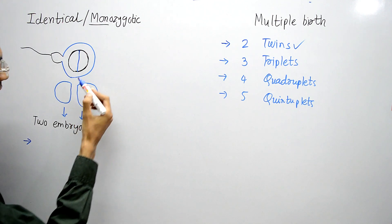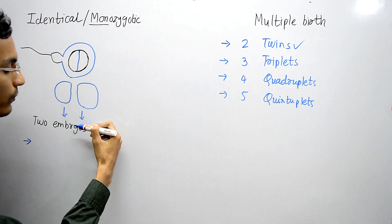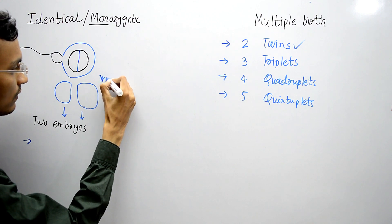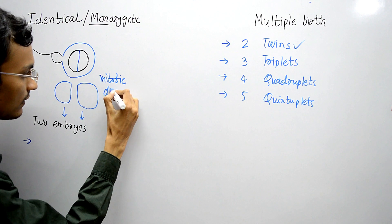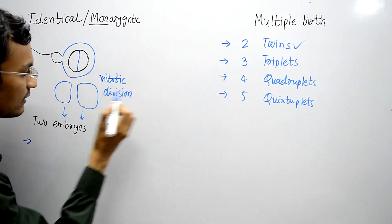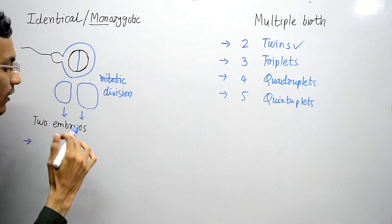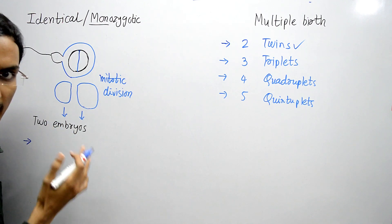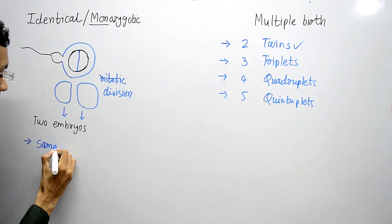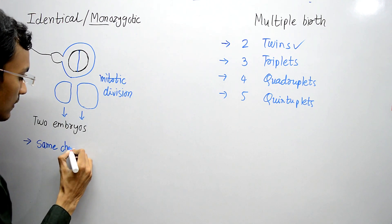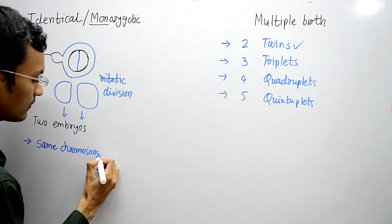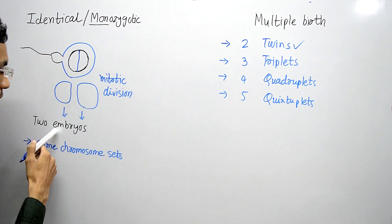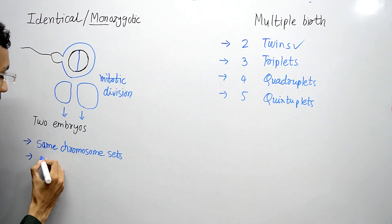As you can see, the two blastomeres develop into two different embryos. This division is mitotic division. Because it is mitotic division, these two blastomeres develop into two different embryos that share the same sets of genes and the same chromosome sets — they have identical genes.